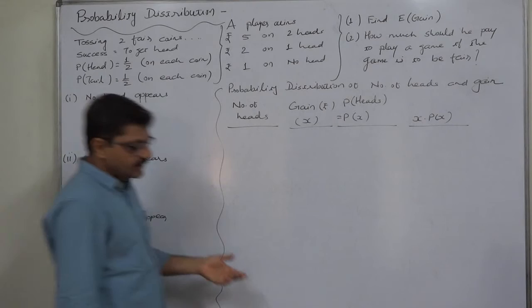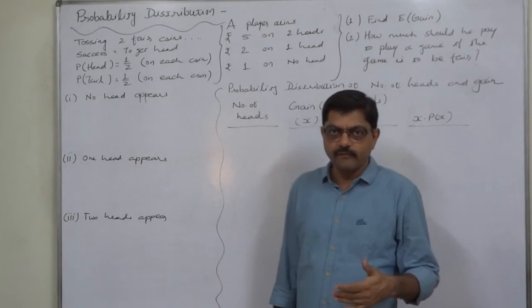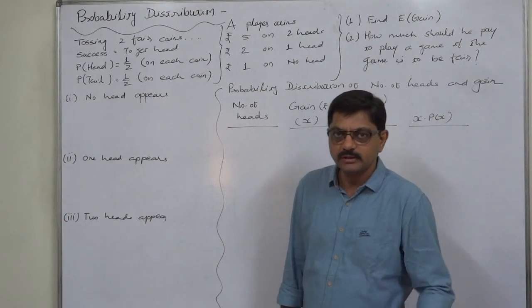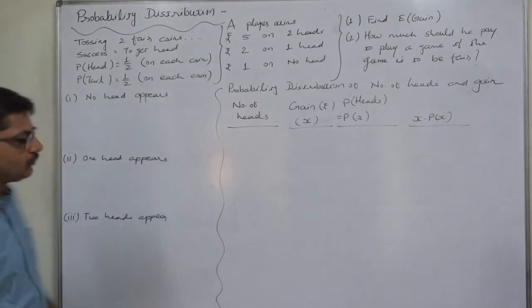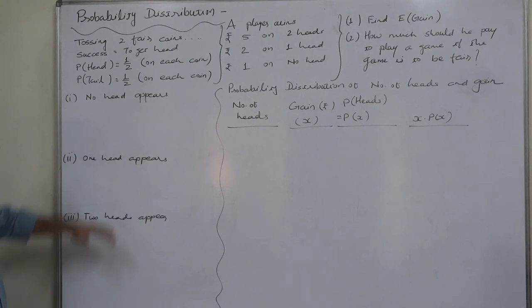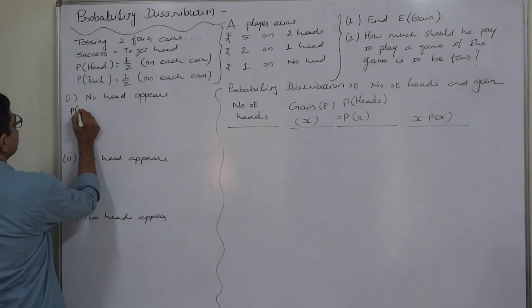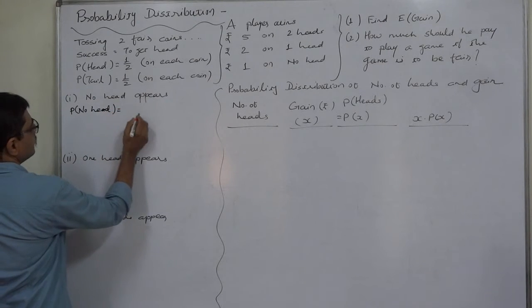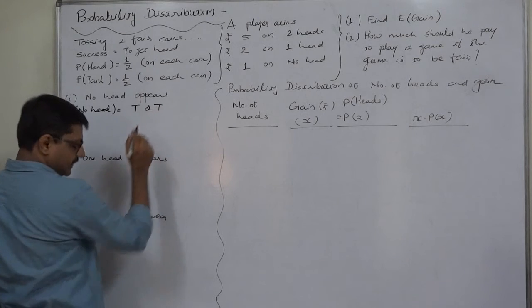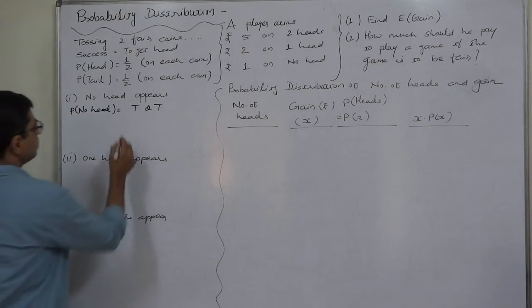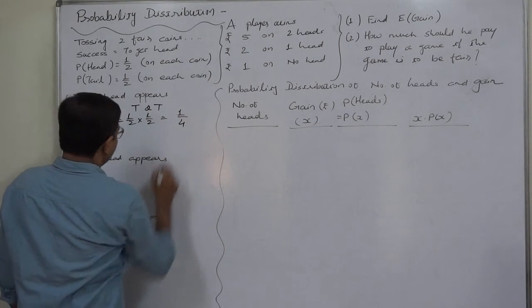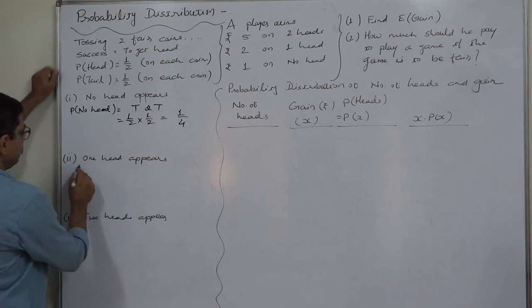The respective probabilities correspond to earning a gain of rupees five, two, and one. First we calculate the probability of the number of heads appearing. For no head: tail on first coin and tail on second coin — that is one-half times one-half, which equals one-quarter.